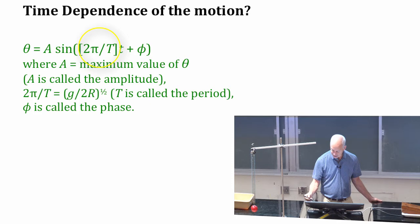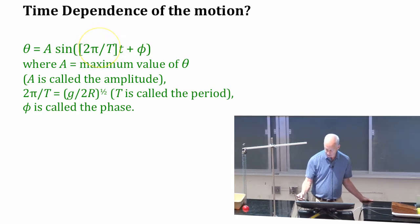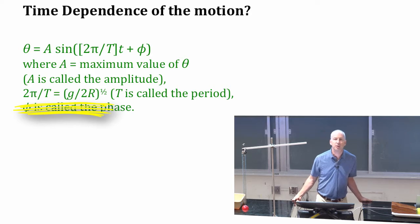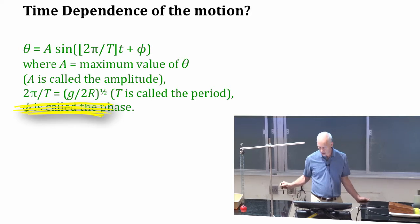And so 2π over T squared is g over 2r, which means 2π over T is the square root of g over 2r. T is the period.